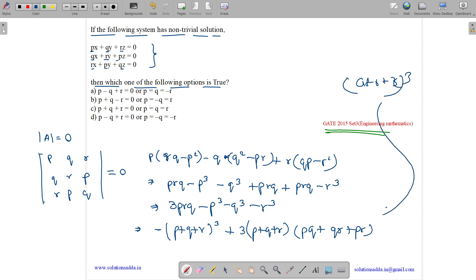We can write this as this. Let us see the options. For this to be zero, P plus Q plus R should be zero, which means P plus Q plus R should be zero.